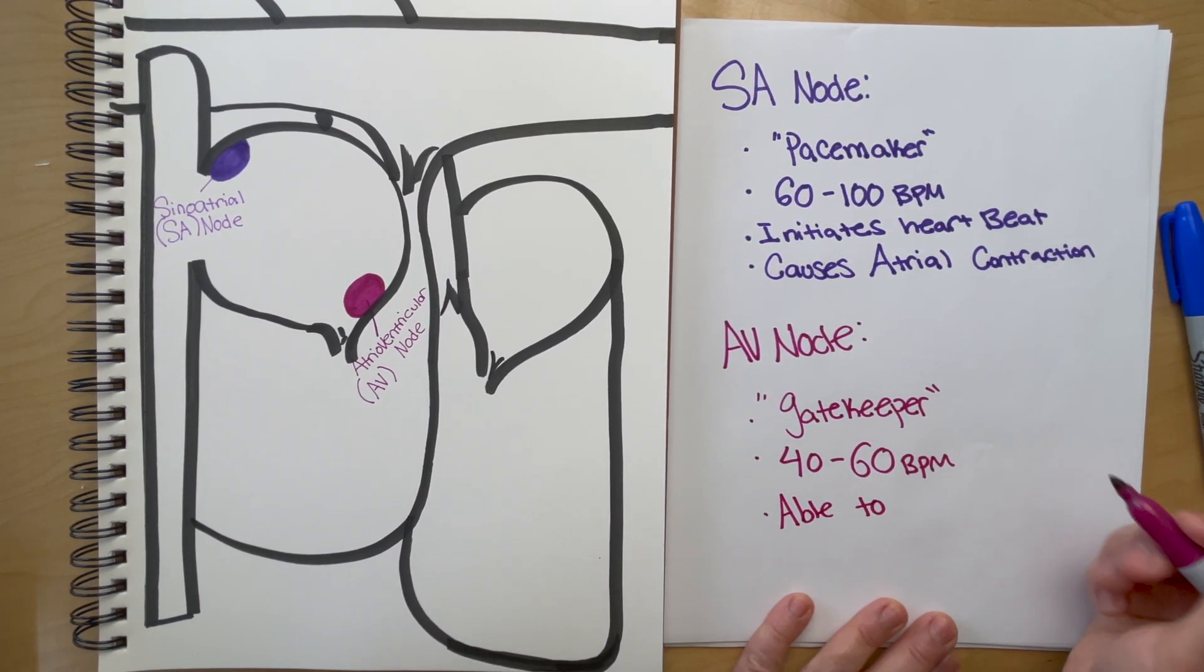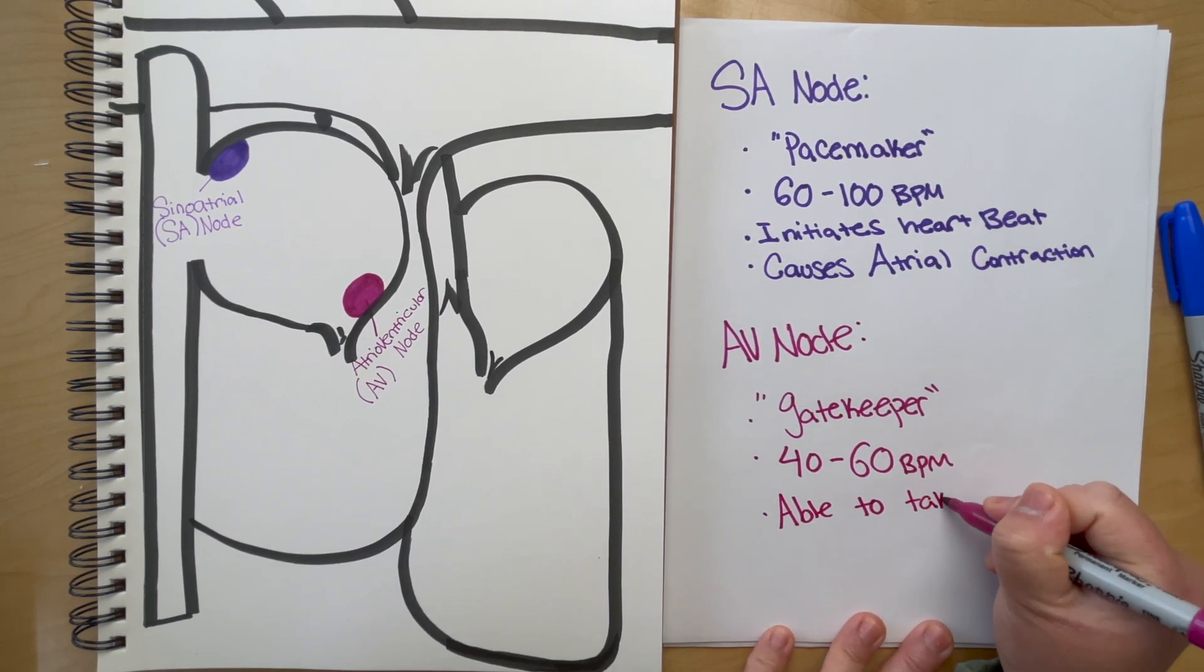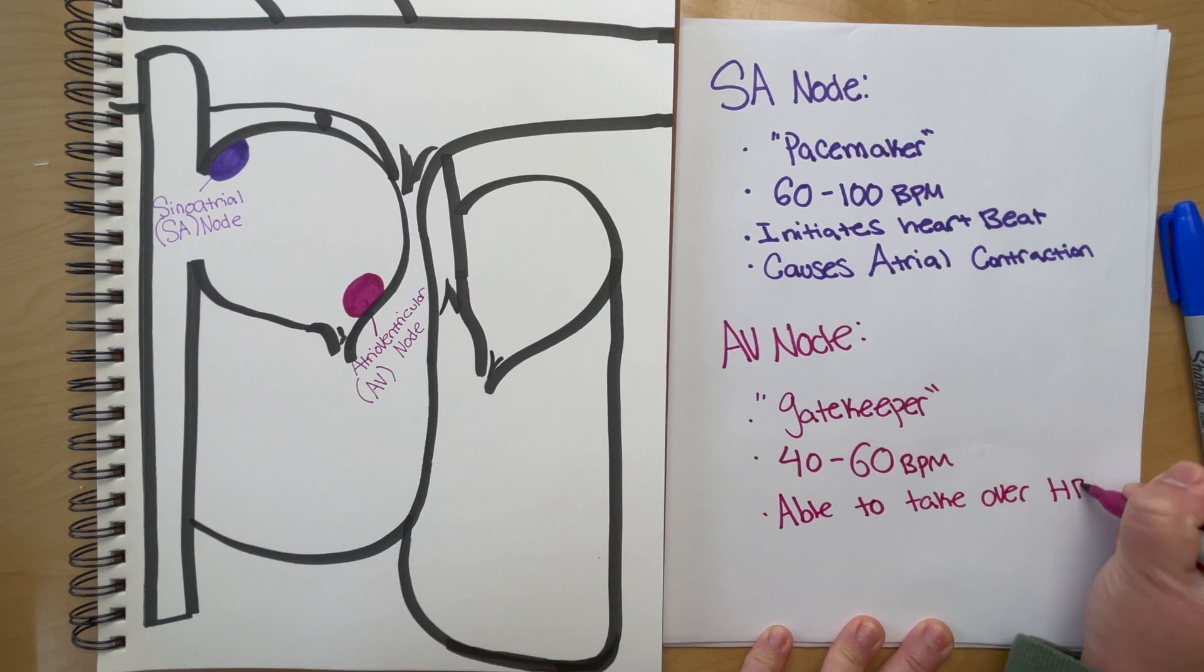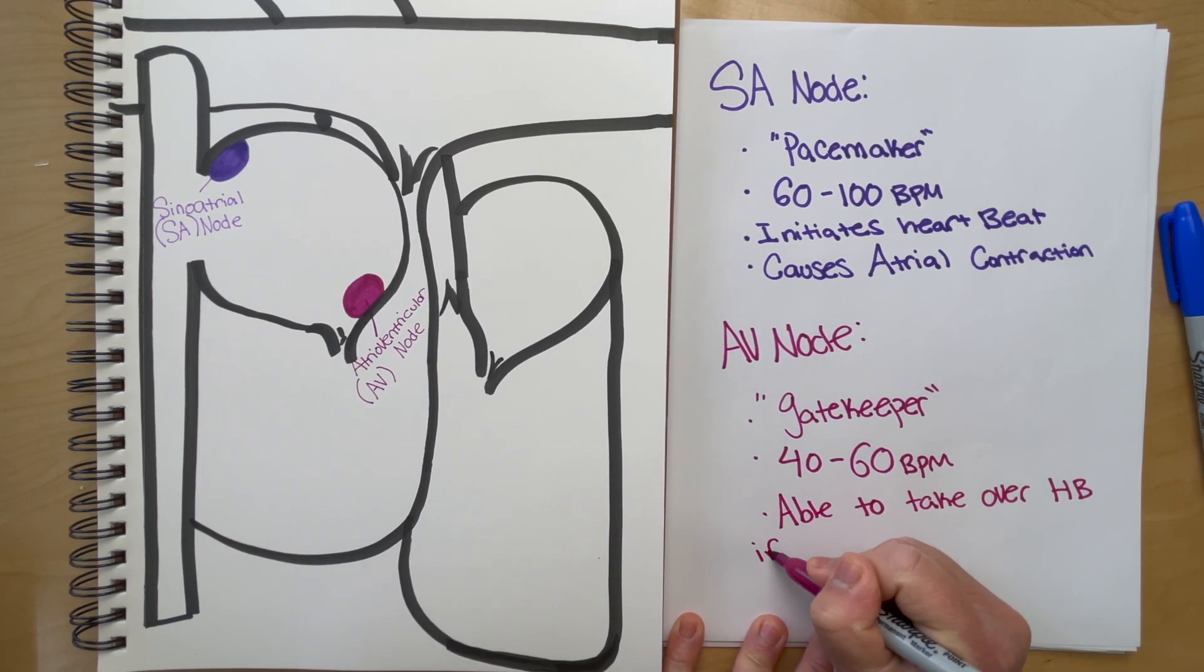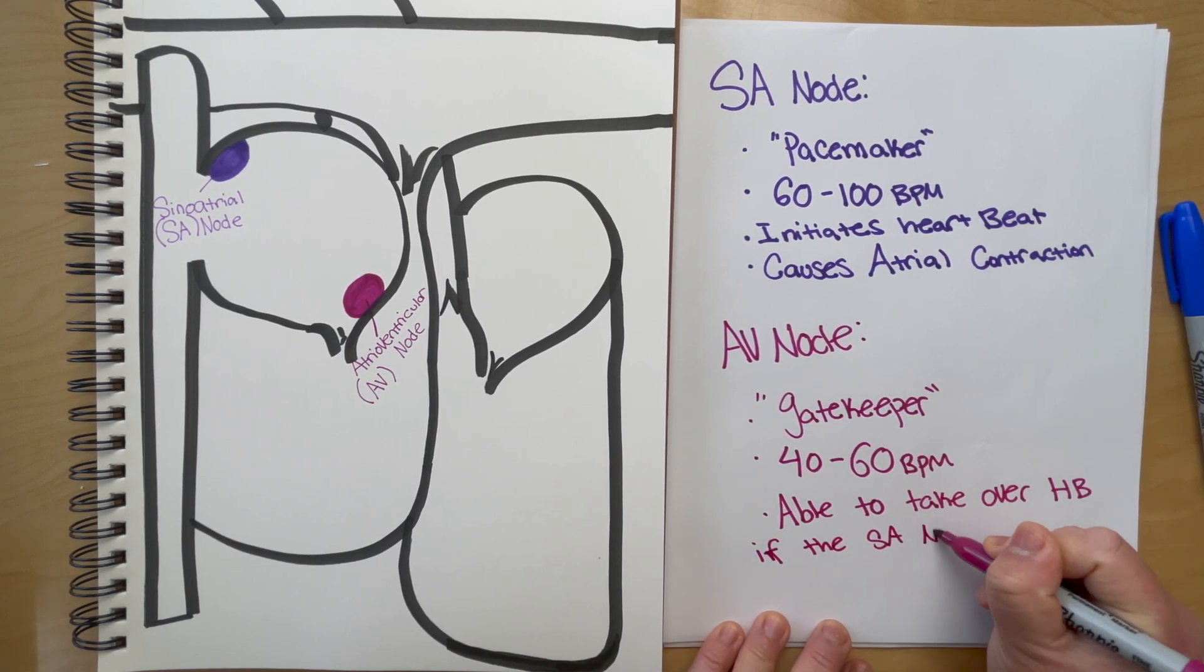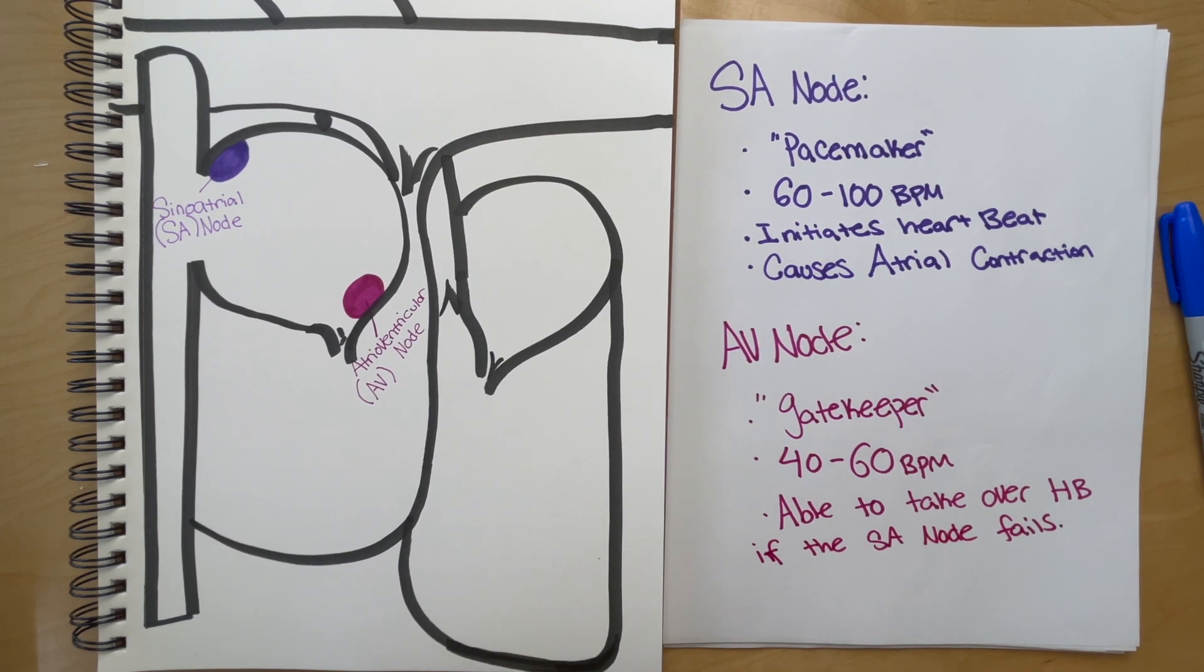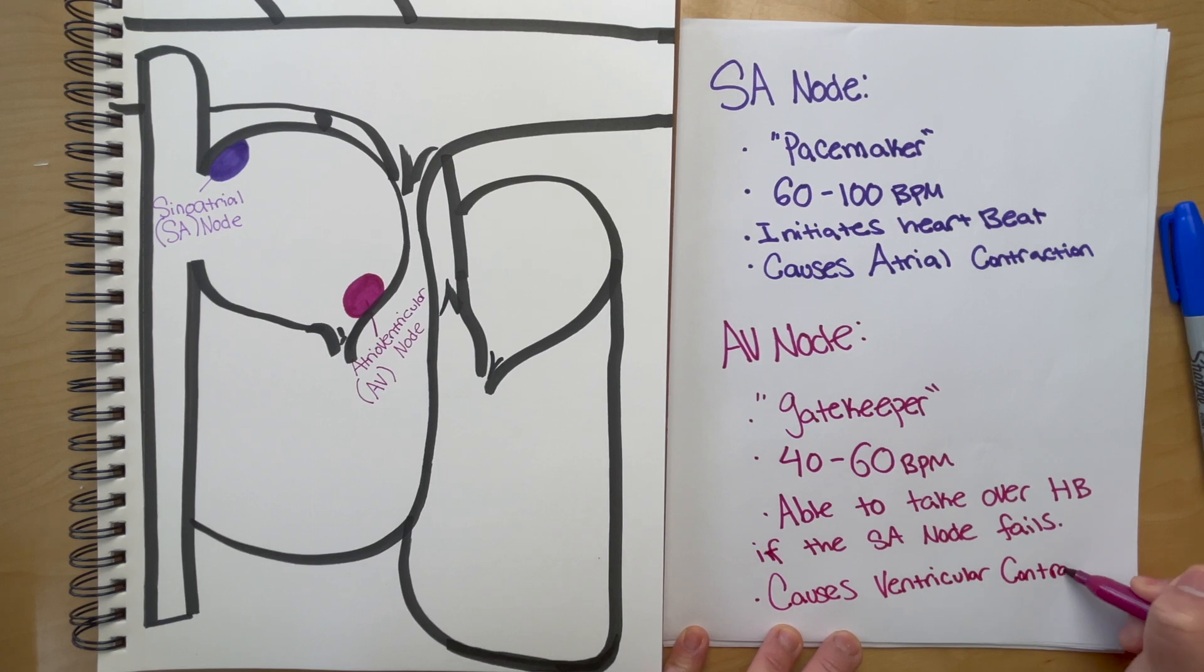If there's damage to the SA node, ischemia around the SA node, blockage, or for whatever reason the SA node is not able to function properly, then the AV node will compensate. It's only able to generate a rate of 40 to 60, which is below the average heart rate, so there will need to be intervention because this is too low for the heart to keep up normally for a long period of time.